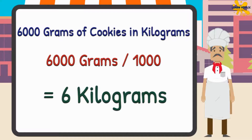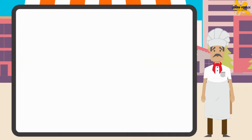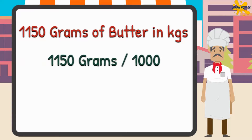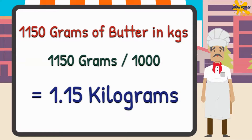If not, you can try again. Now I add 1150 grams of butter to cookies. How much will it be in kilograms? Just divide 1150 grams by 1000, and we will get 1.15 kilograms.